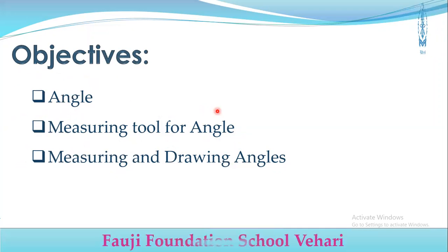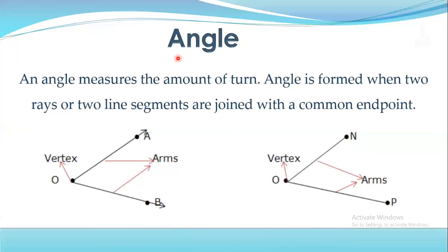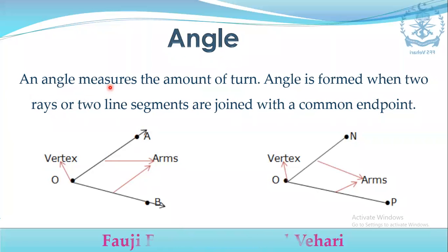What is an angle? Angle is the amount of turn. Angle is formed when two rays or two line segments are joined with a common end point. You can see that you have two rays — one is OB and one is OA. We call the common point the vertex, and these two are the arms.